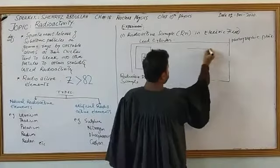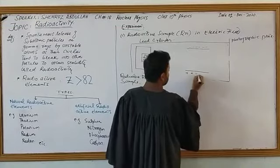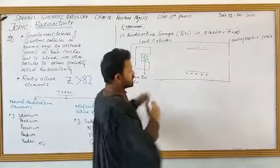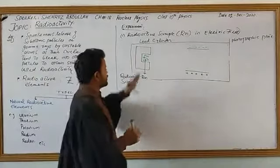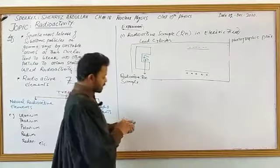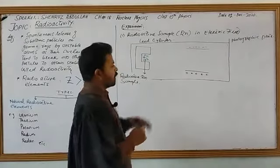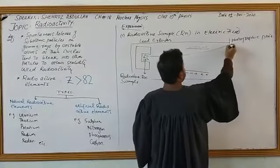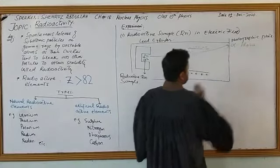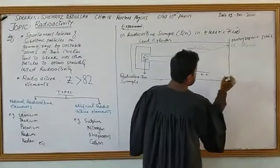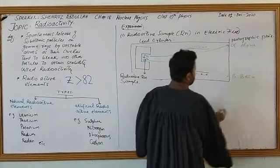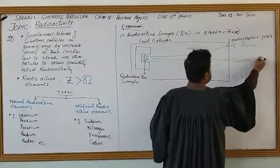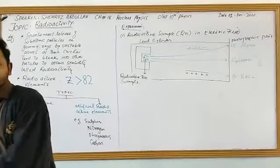In the electric field setup, two parallel plates are arranged — one negative and one positive — creating an electric field between them. The same radioactive sample (radon) is placed inside. We observe the same three types of rays: alpha moves toward the negative plate (upward), beta moves toward the positive plate (downward), and gamma shows no deviation — it travels straight through.